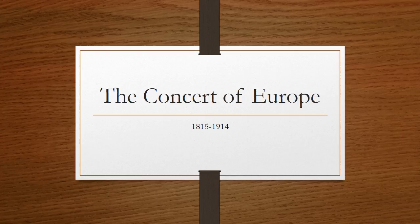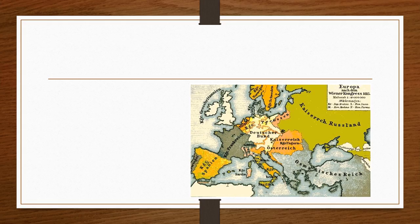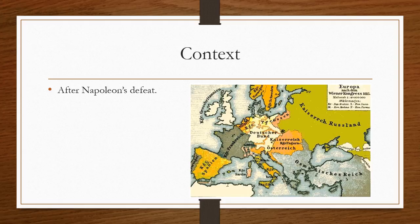Today's lesson is going to be about the Concert of Europe, which was the name given to the international alliance system established in Europe from 1815 till 1914 — from the Congress of Vienna till the outbreak of the First World War. The context was similar in a way to that of the Congress of Vienna. It happened after Napoleon's defeat, and the creation of this system of alliances was one of the ends of the Congress of Vienna.